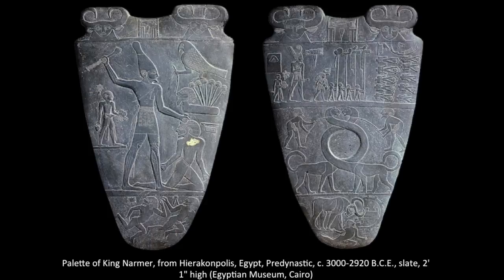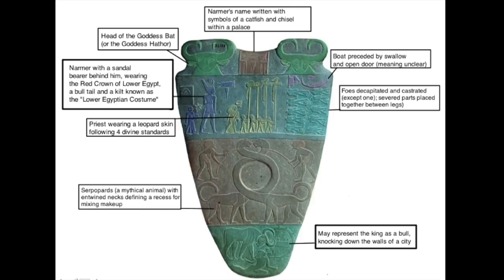The Palette of Narmer is one of the oldest historical artworks preserved. There is an incredibly high level of craftsmanship presented here, but interpretation of its meaning is tricky. It is an elaborate, formalized version of a utilitarian object commonly used in the pre-dynastic period to prepare eye makeup. This piece is important because it creates the stylistic conventions Egyptians will use for millennia. This object is about two feet high and was discovered in 1898, found with a collection of other objects that had been used for ceremonial purposes and then ritually buried within the temple at Hierakonpolis.